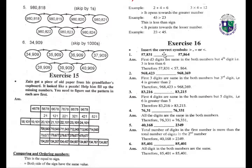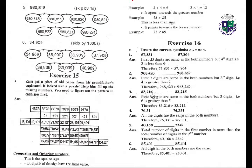Exercise sixteen: insert the correct symbols — greater than, equal to, or less than. 57,831 is less than 57,864. 968,423 is greater than 968,269. 968,423 is greater than 83,215.